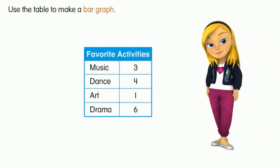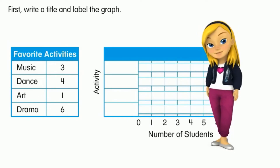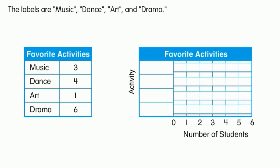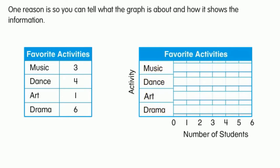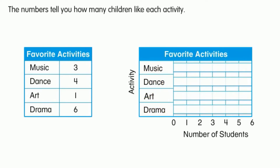Use the table to make a bar graph. First, write a title and label the graph. The title is Favorite Activities. The labels are Music, Dance, Art, and Drama. It is important to write a title and labels so you can tell what the graph is about and how it shows the information. These labels tell you what the activity is, and the numbers tell you how many children like each activity.